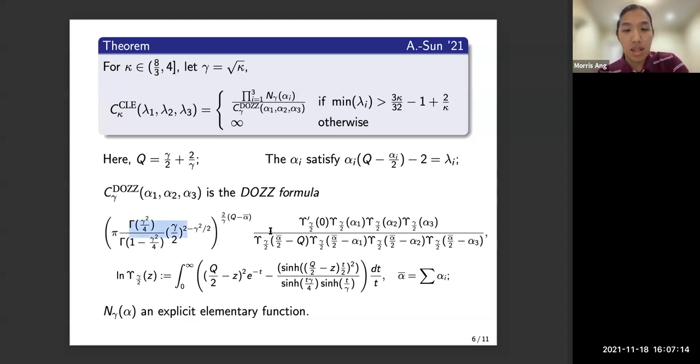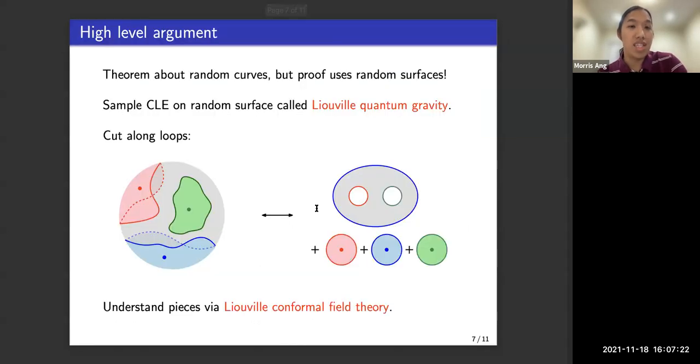So these Upsilon functions often arise in Liouville conformal field theory, which makes sense because our argument is going to pass through Liouville conformal field theory.